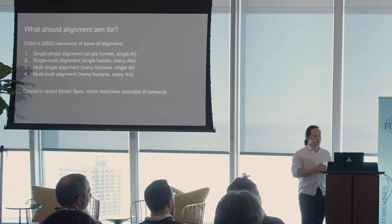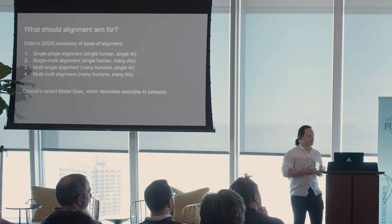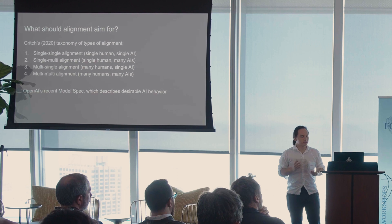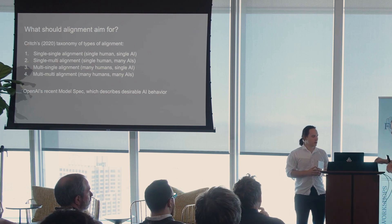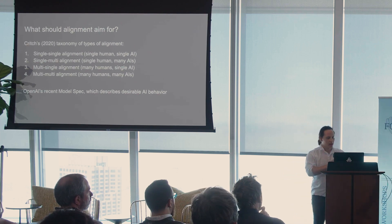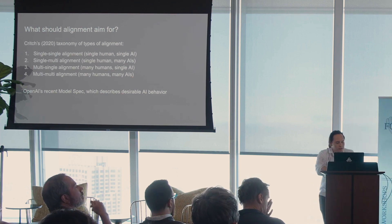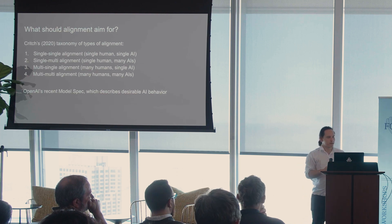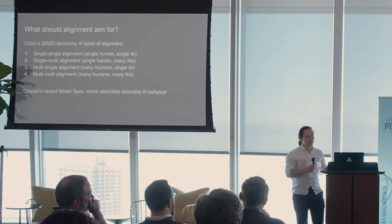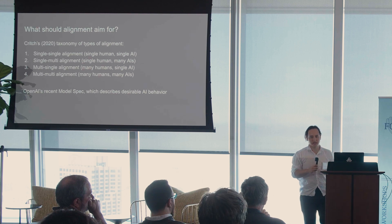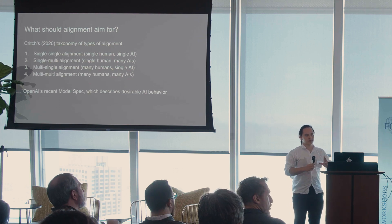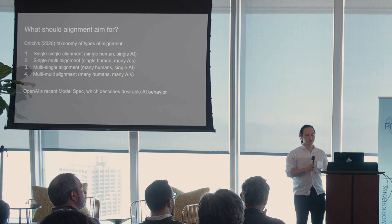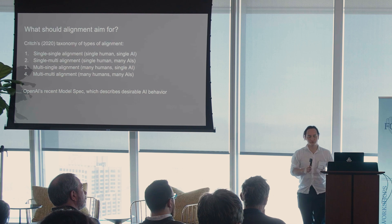So multi-multi alignment is trying to align many AIs to many humans, and single-multi alignment is trying to align many AIs to a single human. Each of these has different considerations. I'm also drawing on ideas developed as part of the release of the model spec from OpenAI — a document that is basically our best attempt to describe concretely what we want each system to do and how it should make trade-offs between different values. It's kind of like a constitution for our models, focusing on concrete examples.